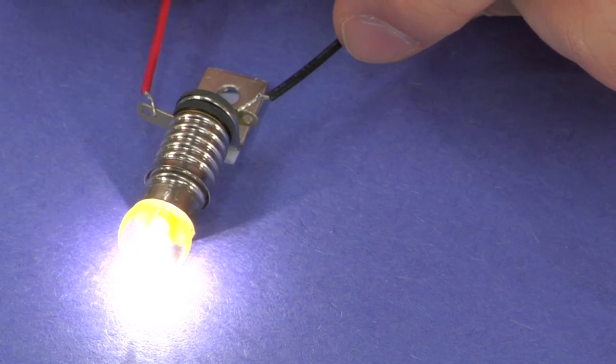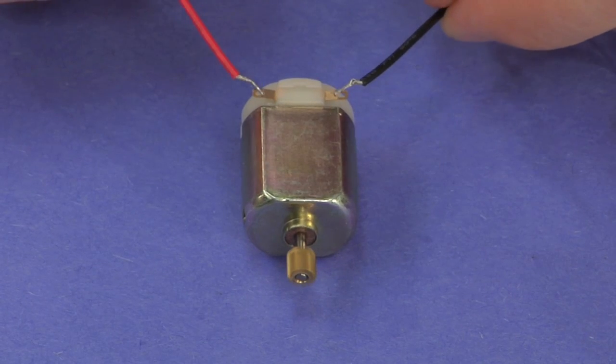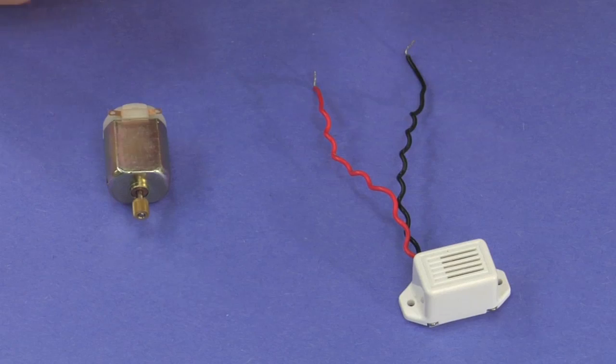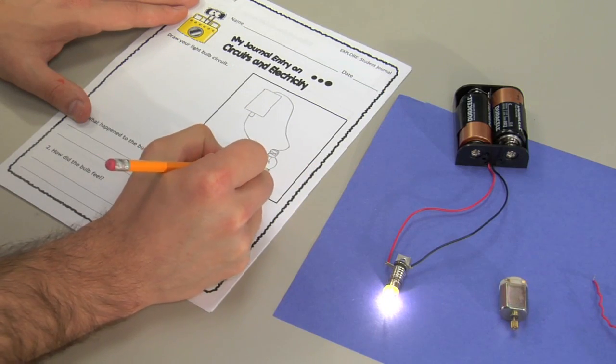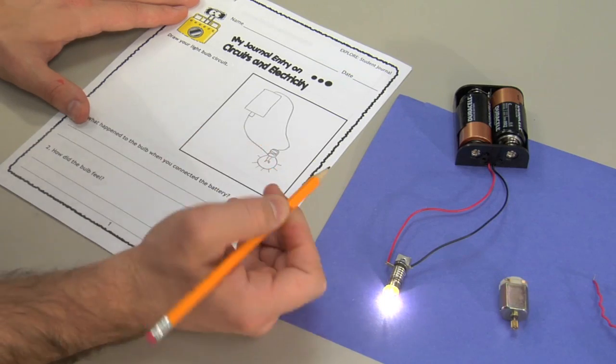First, a light bulb, a hobby motor, and a buzzer. Students can draw a picture of each circuit before answering the questions in their journals.